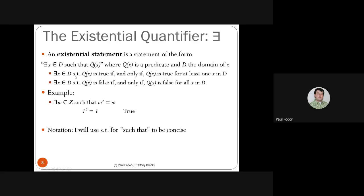I'm using ST as notation for 'such that' to be concise. Some students have asked what ST means — rather than writing 'such that' after each existential quantifier, I'll just use ST. You can also use a comma: 'there exists X, Q(X).' It's easier to read: 'there exists a student such that he gets an A.'